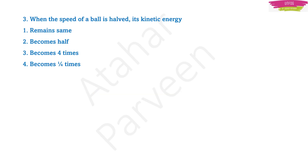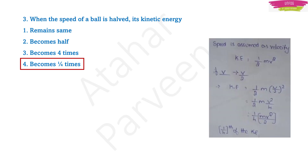Question number three: when the speed of a ball is halved, its kinetic energy — ? We know the formula for kinetic energy is half mv squared. The four options are: remain same, becomes half, becomes four times, becomes one by four times. The correct answer is it becomes one by four times. You have to make the value of speed equal to v upon two, because the speed is halved. So in place of v you write v by two, and since v is squared in the formula, it is half mv squared.